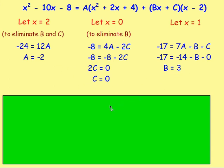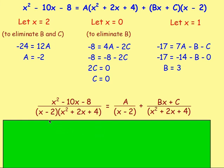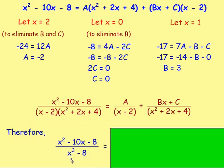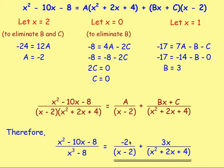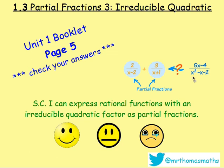We now have a = −2, b = 3, c = 0. Therefore, (x² − 10x − 8) over (x³ − 8) equals −2 over (x − 2) plus 3x over (x² + 2x + 4). Give these questions a shot in the workbook, page 5. If you still need the workbook, just email me and I will send you one — it has all the questions for unit 1 and all the answers as well. Good luck, and if you have any problems, let me know.